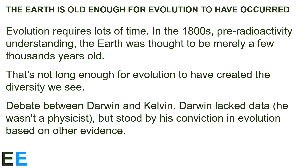Back in the 1800s, the evidence for evolution led to a debate between Charles Darwin and Lord Kelvin. The theory of evolution implied that the Earth was very old, but physicists thought that the Earth was much younger based on estimates of the rate of cooling of the Earth that didn't include radioactivity. Darwin lacked the data to demonstrate that the physicists were incorrect, but he stood by his conviction in evolution based on other evidence, including the fossil record. This disagreement about the age of the Earth was a major problem for evolutionary theory in the 1800s.